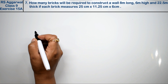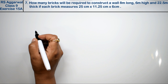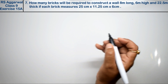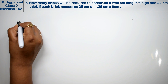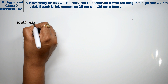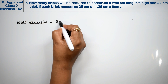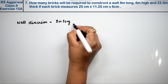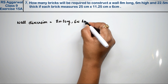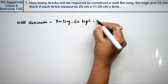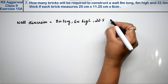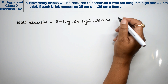Let's do question number 7 of exercise 15a, that is volume, surface and area of solids. Question number 7 is: how many bricks will be required to construct a wall? The wall dimensions are 8 meters long, 6 meters high, and 22.5 cm thick.